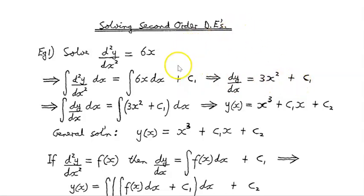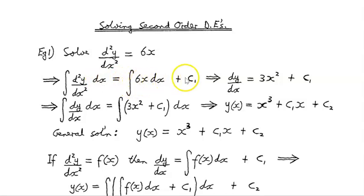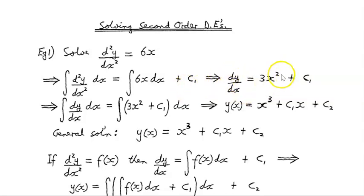We're going to anti-differentiate both sides. So the integral of d²y/dx² dx is equal to the integral of 6x dx plus c1 — that's our first constant, and we must include the constant of integration. That implies that dy/dx is 3x² plus c1, since the anti-derivative of 6x is 6x²/2, which is 3x².